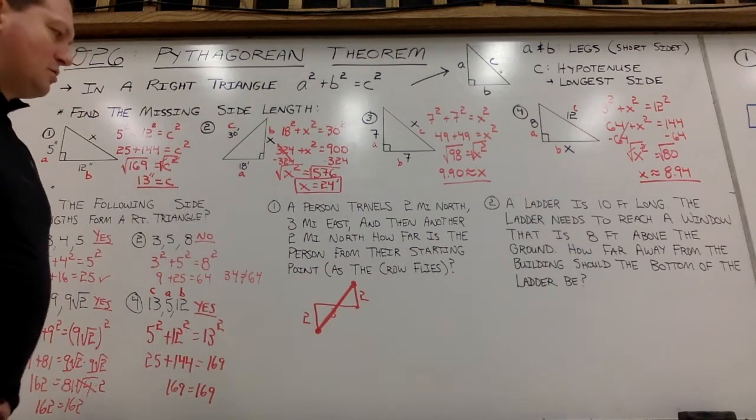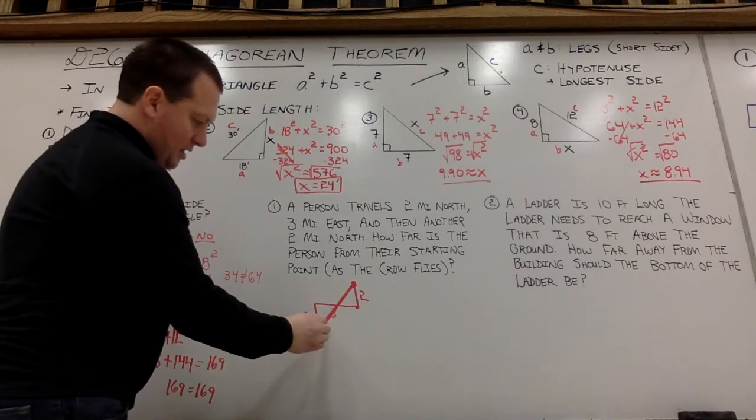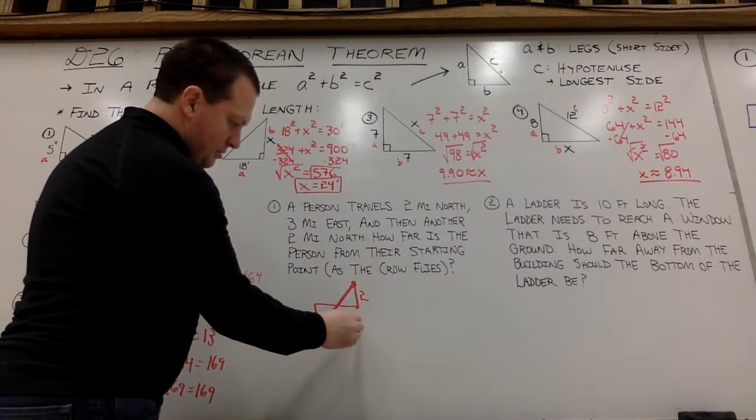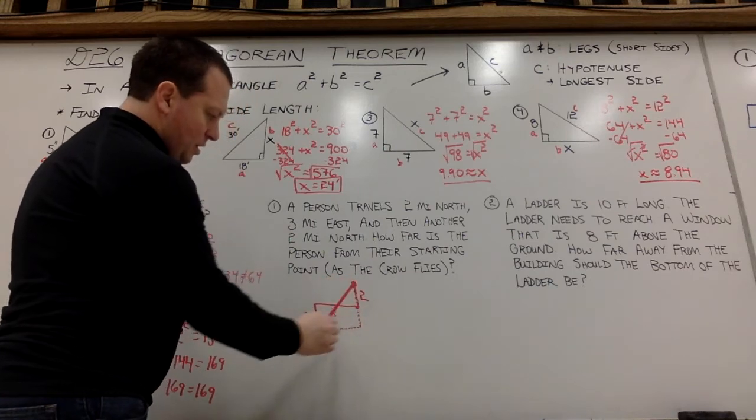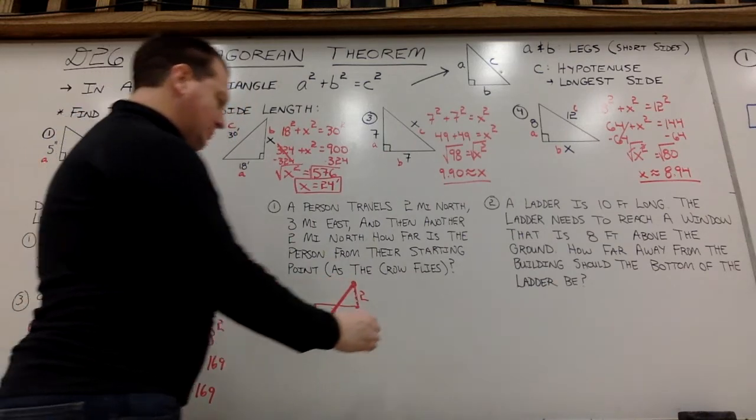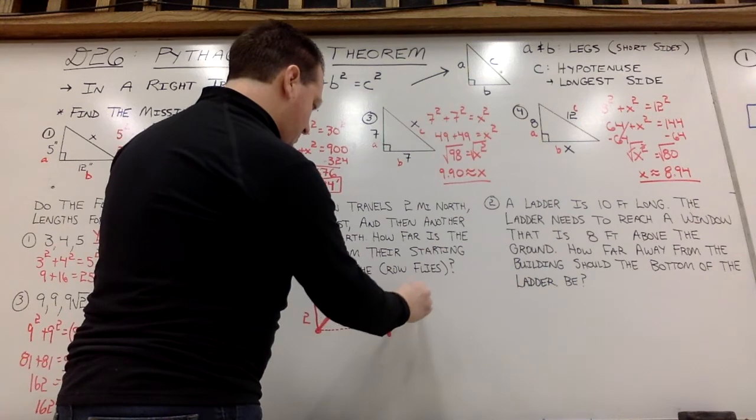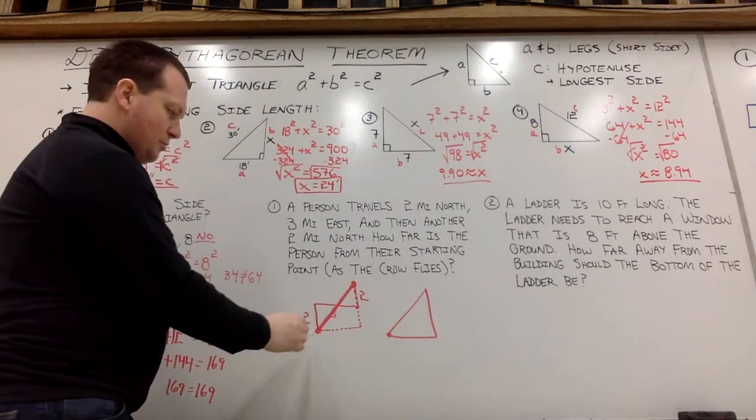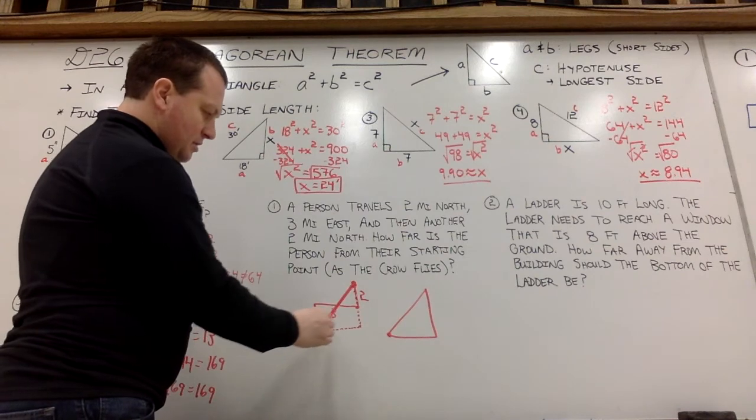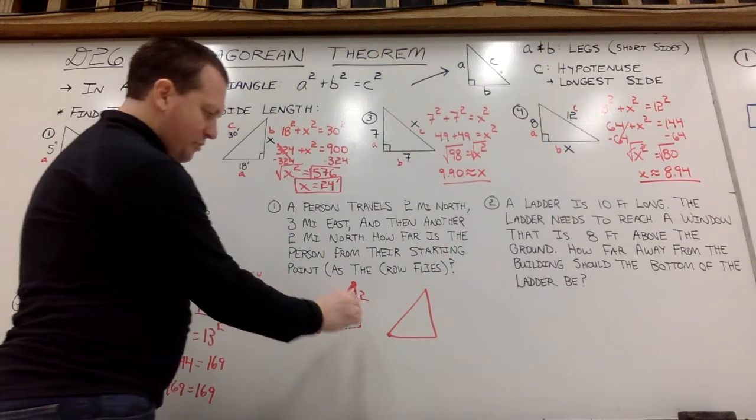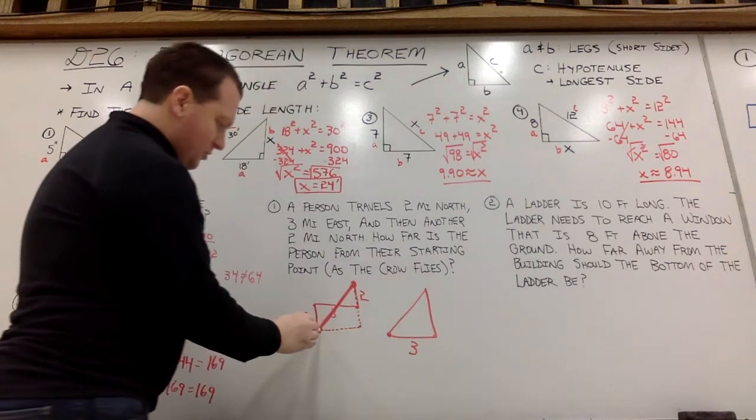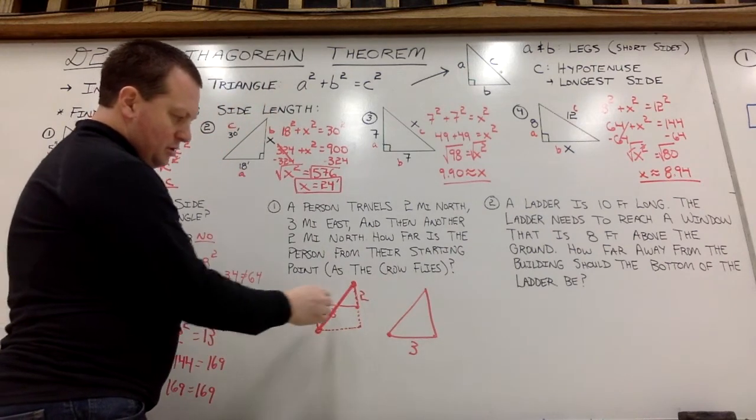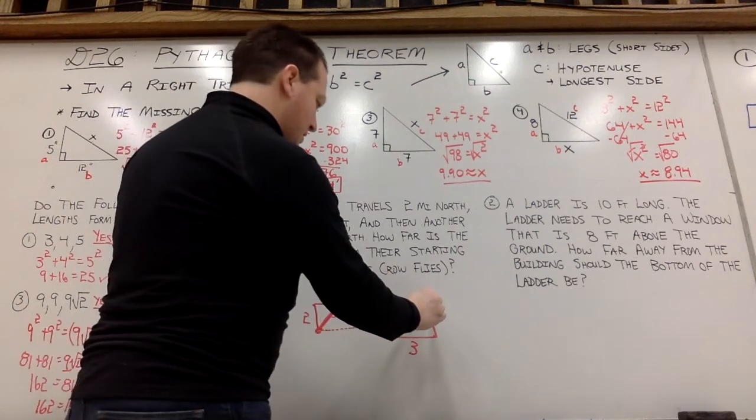How far is A to B? Well, what I'm going to do is put the two right triangles together and make one big right triangle. So my total distance traveled east is 3, and my total distance traveled north is 2 plus that 2, so I will get 4.